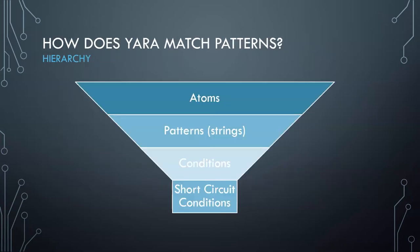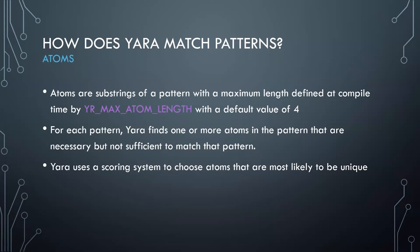So how does YARA match patterns? It starts with atoms, then it runs patterns — which live under the strings header — then it runs conditions, and then other conditions after short-circuit operators. Atoms are the core part of how YARA initially decides which rules are going to run.